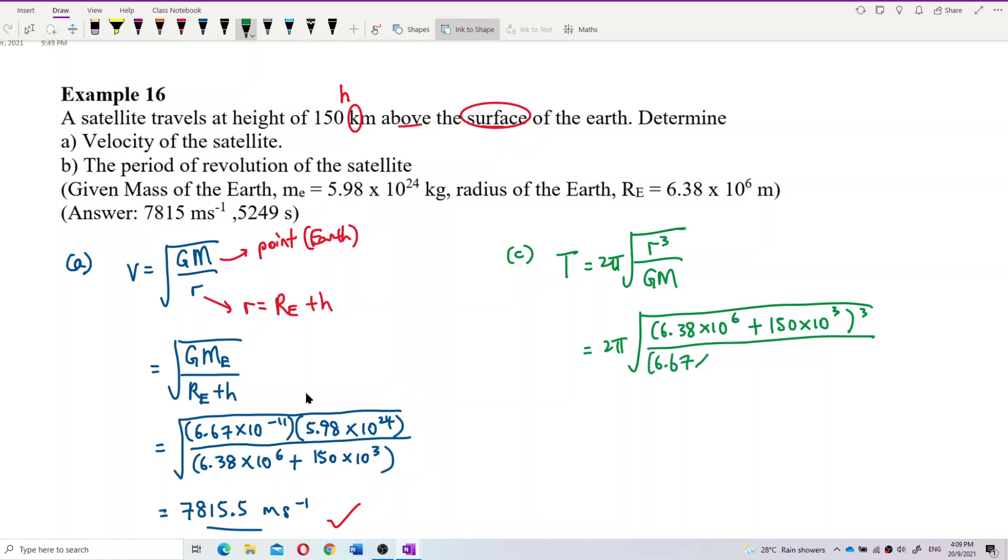Square root, G is 6.67 exponent negative 11, multiply by the mass of Earth. Remember, this is the mass of Earth, and this r is radius of Earth plus the altitude.